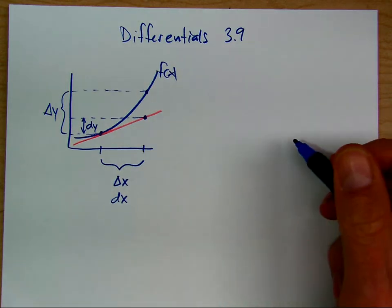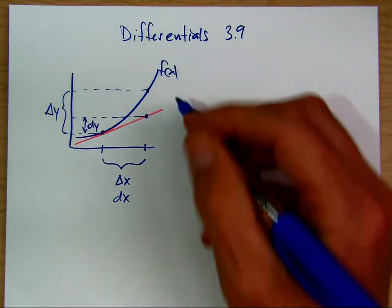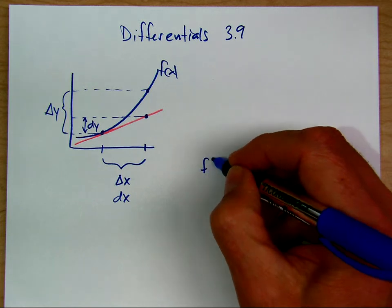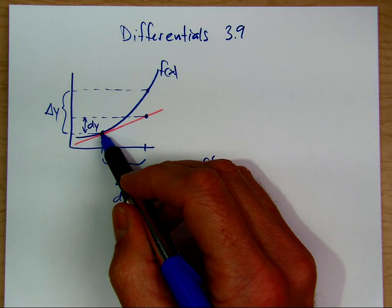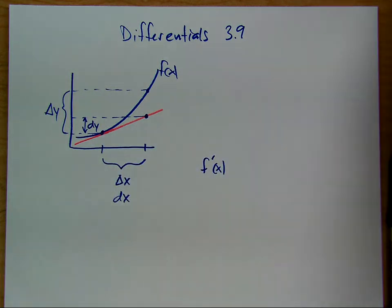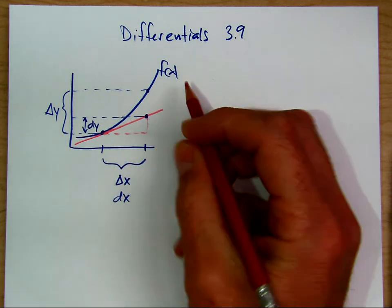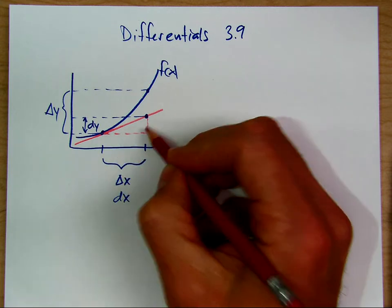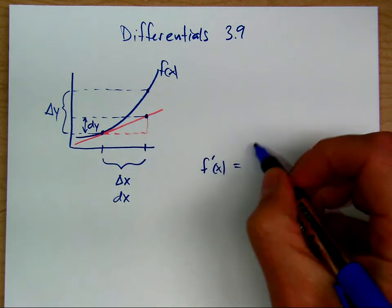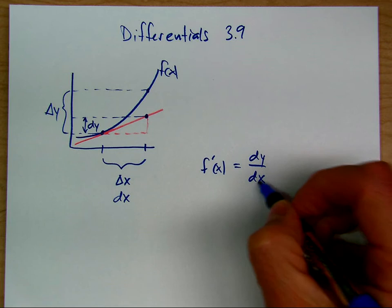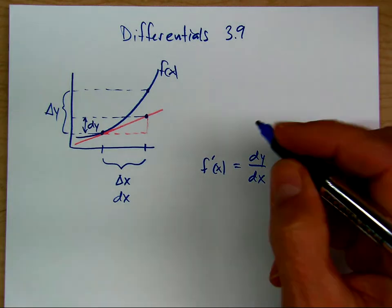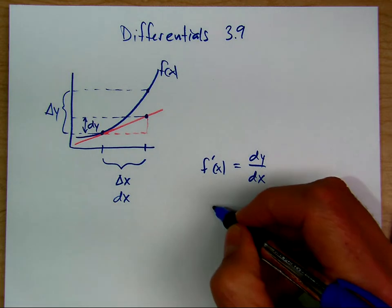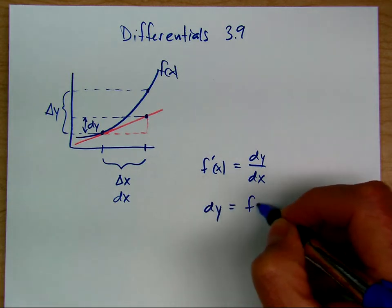Then we can see a relationship to the derivative. If f prime of x is the slope of the tangent line at that point, then looking at the red line with the distances dy and dx, we can say f prime equals rise dy over run dx. We've been using this notation as being the same as the derivative, and we can now see the connection in terms of differentials. We can also say that dy equals f prime dx.